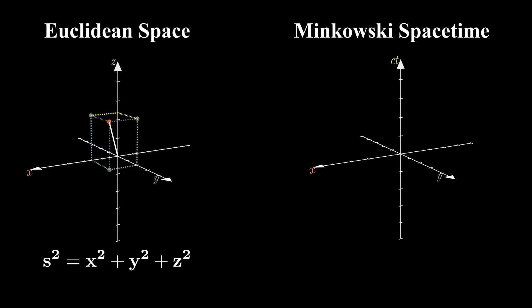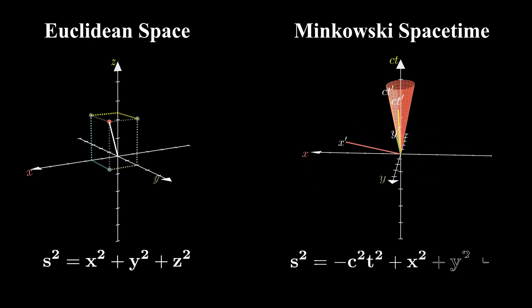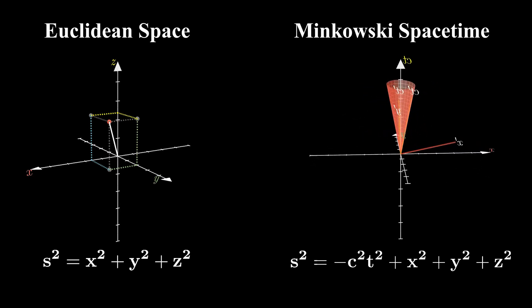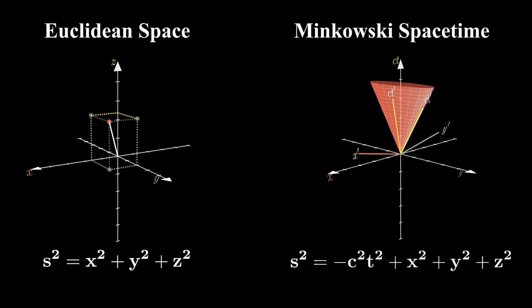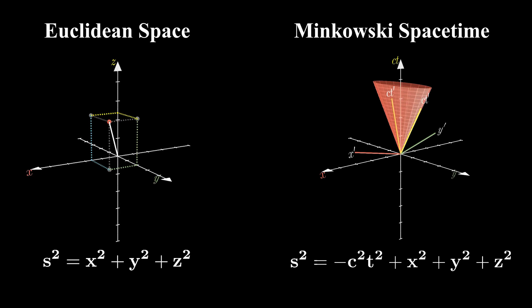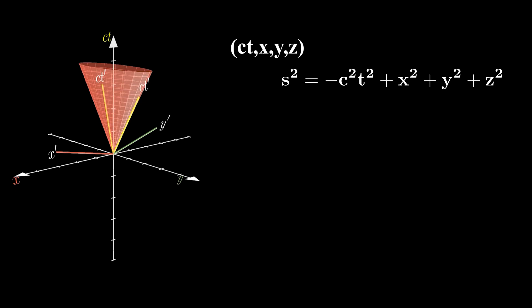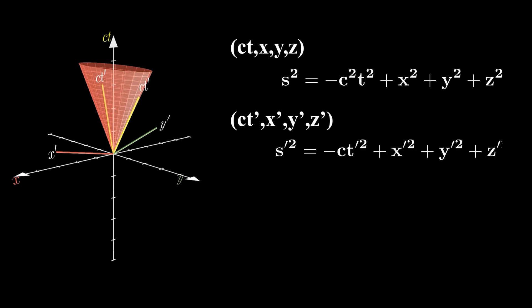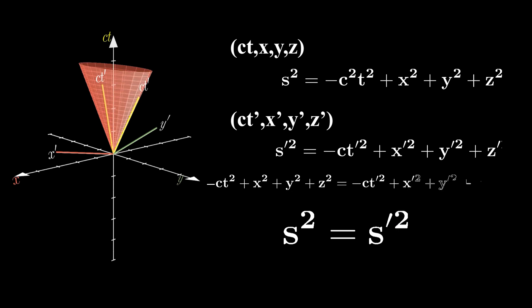In Minkowski space, time is included in the distance between two events since time and space are unified. The negative sign in front of time in the Minkowski metric indicates that space and time are connected in an inverse manner. This negative sign ensures that the spacetime interval remains unchanged under Lorentz transformations, preserving Lorentz symmetry — meaning physical laws remain the same for all observers. Consider an event observed at coordinates t, x, y, z in one frame. If another observer moving at speeds close to the speed of light measures the same event, the new coordinates t-prime, x-prime, y-prime, z-prime transform according to Lorentz transformations, yet the spacetime interval remains the same for both observers. This invariance is one of the cornerstones of special relativity.